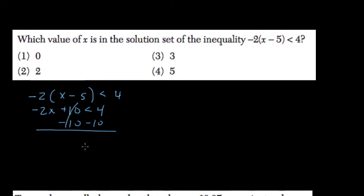This cancels out. 4 minus 10 is negative 6, greater than negative 2x. Divide both sides by negative 2.